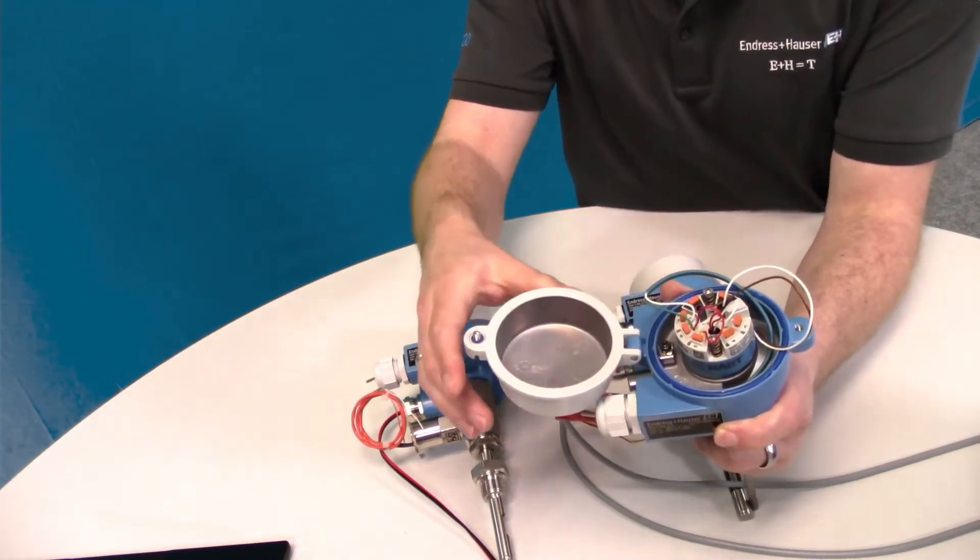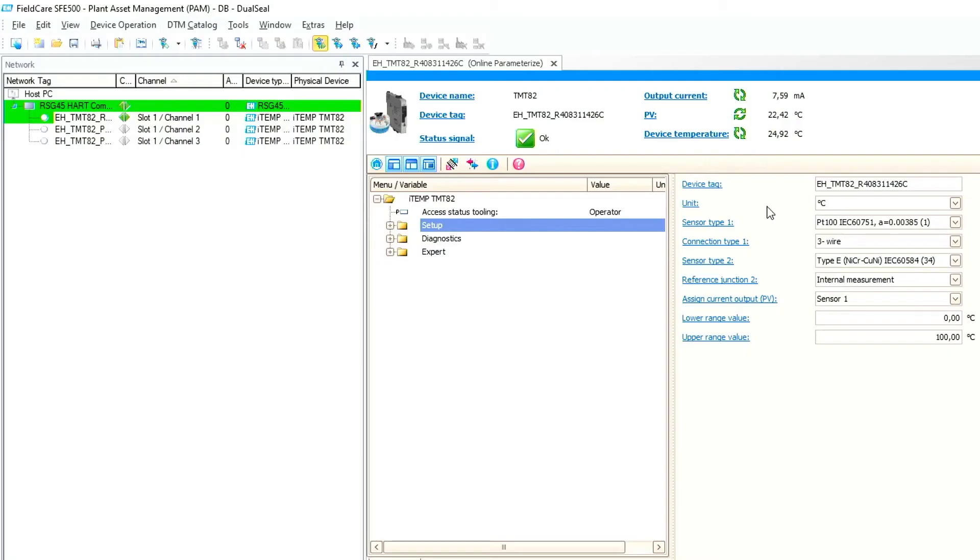Let's have a look into the configuration of this. Here you see the setup of our TMT82 in FieldCare. Key settings are here. Sensor one is configured as an RTD PT100 like ordered for the sensor measurement. And sensor type two is configured to type E thermocouple. Output is assigned to sensor one only because the measured temperature should be output.